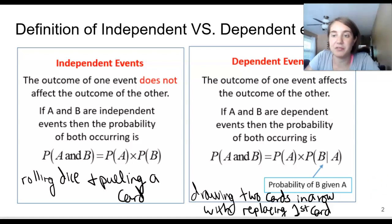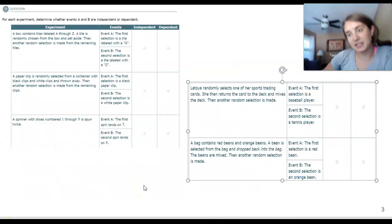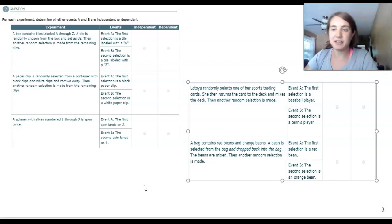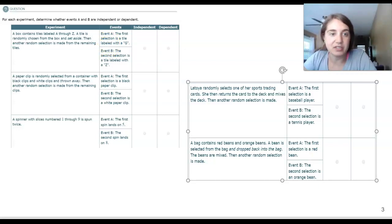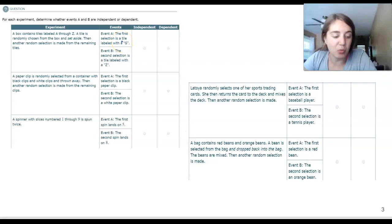That's the probability of independent and dependent events — make sure you write down these formulas. Now we'll practice identifying them. A box contains tiles labeled A through Z. A tile is randomly chosen and set aside, then another tile is selected. Event A is the first tile being G and Event B is the second tile being labeled Z. Since we are not replacing the tiles, what we pull the first time does affect what we pull the second time — so these are dependent events.